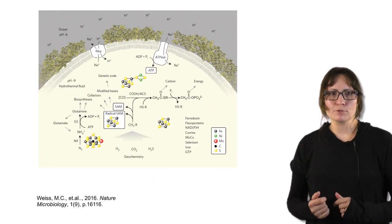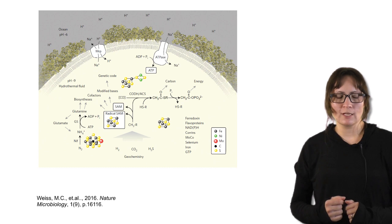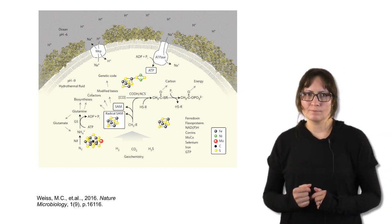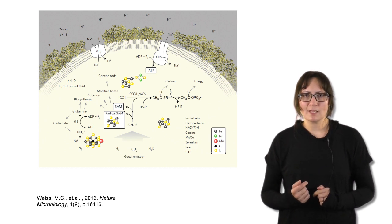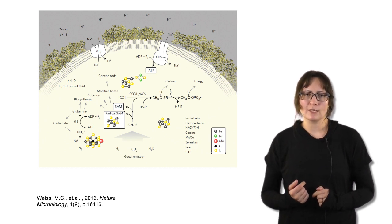This is a diagram of the proposed main metabolic pathways of the last universal common ancestor cell. The atmosphere of the early earth did not have oxygen, so all of the metabolism of earliest cells was anaerobic.